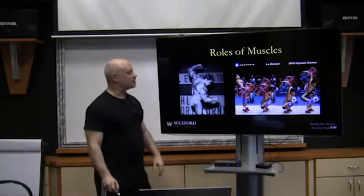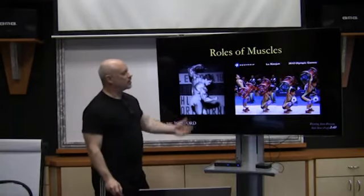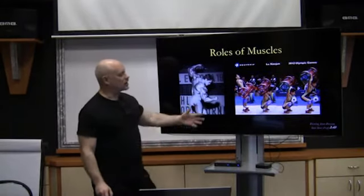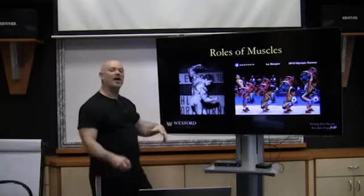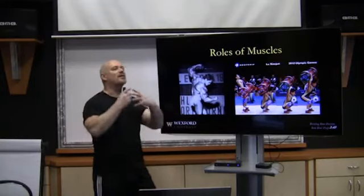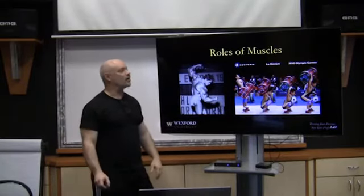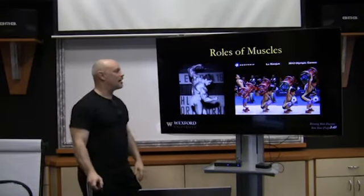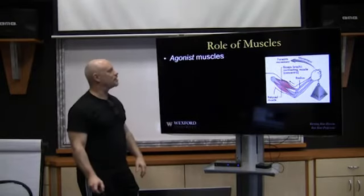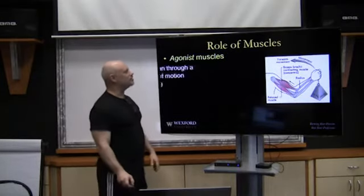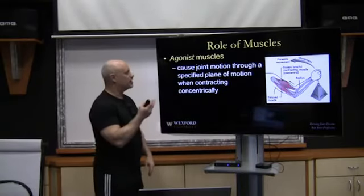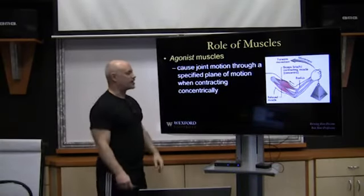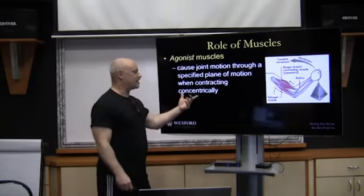Now let's look at the role of muscles. We're going to look at one of the best lifters in China and look at Arnold — they're going to help us increase our knowledge of what the role of muscles in the body are to help make movement happen. The agonist muscle causes joint motion through a specific plane of motion when contracting concentrically.